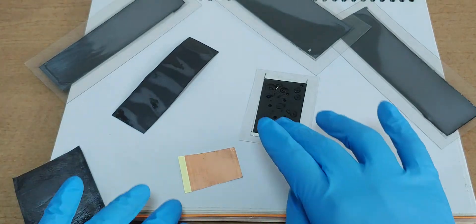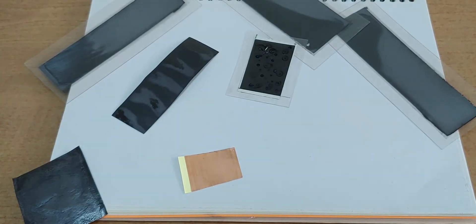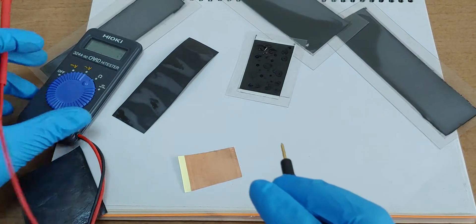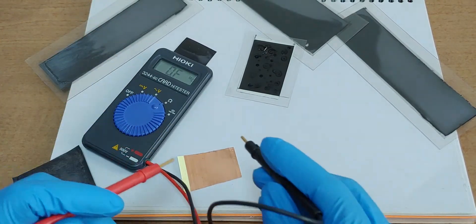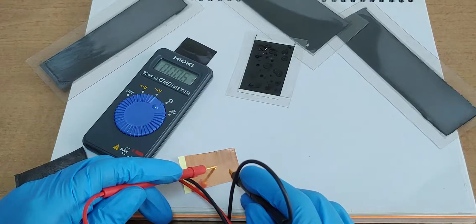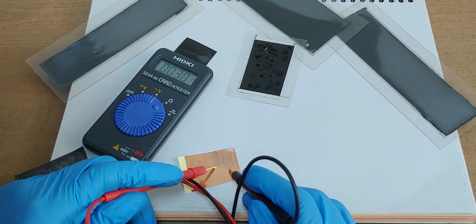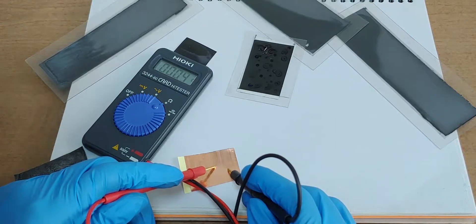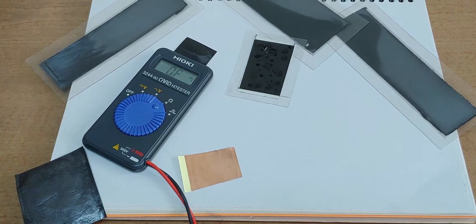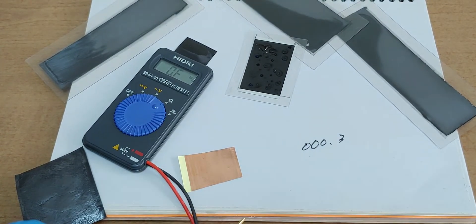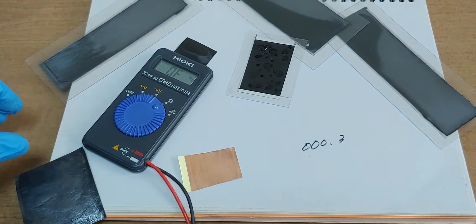Let's see the ohm of copper. About 0.3. Excellent.